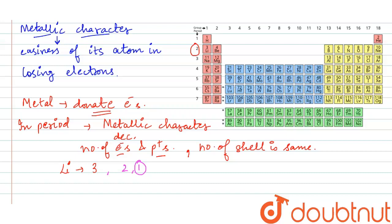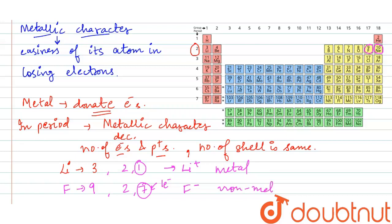In the second period, fluorine has atomic number 9 with configuration 2,7. It is easier for fluorine to add one electron than to remove seven, so fluorine forms a negative anion while lithium forms a positive cation. Lithium is more metallic. As we move from lithium to beryllium, boron, carbon, nitrogen, and fluorine, fluorine is a non-metal. This is the trend in metallic character across a period.